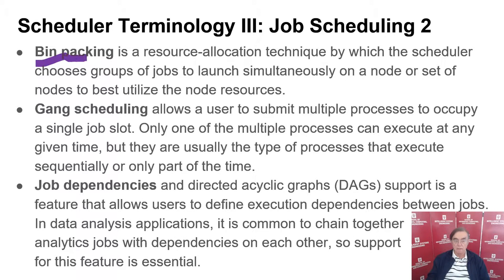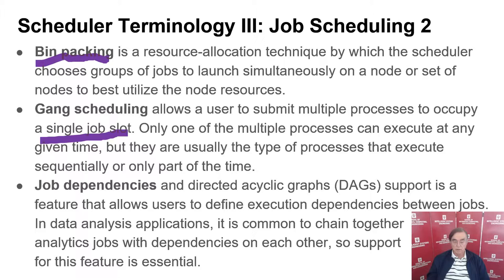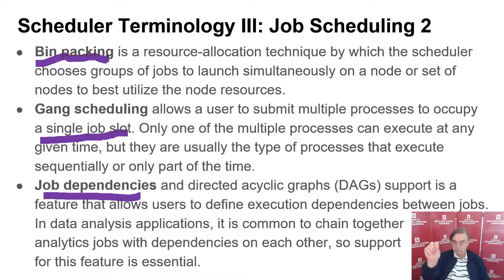Bin packing is an important technology — if you have a giant computer with, say, 10,000 nodes, you need to manage those nodes in a coordinated fashion so that different users each get their own set. Gang scheduling is running multiple processes in a single job slot, associating multiple jobs with a single slot because they're probably linked together, maybe by a graph. Job dependencies are when one job has to run before another can run — there's usually a so-called DAG, the directed acyclic graph, with arrows going from job one to job two, job three to job two, job two to job four, and so on.